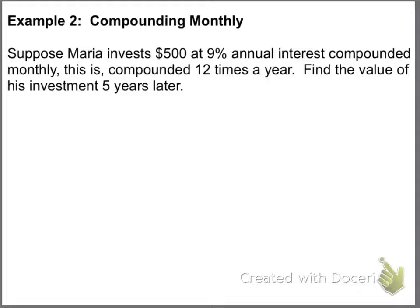Suppose Maria invests $500 at 9% interest, annual interest, compounded monthly. This is compounded 12 times a year. We just talked about that. Find the value of his. Maria is his. I thought Maria was a her. Maria is a he. So, we want to find the value of his investment five years later. So, A equals our principal, $500, times one plus.